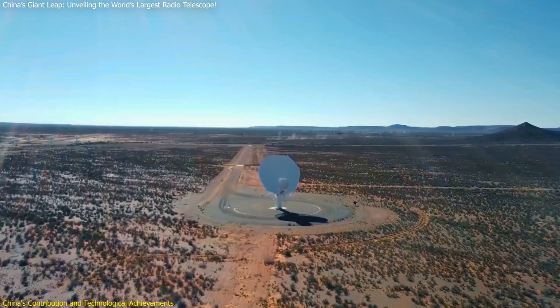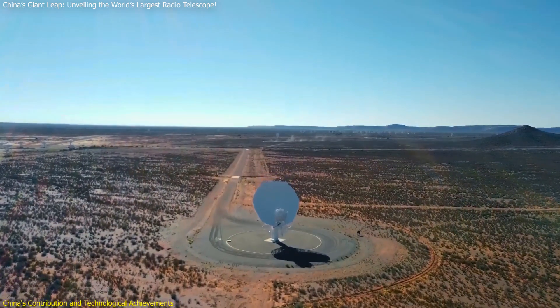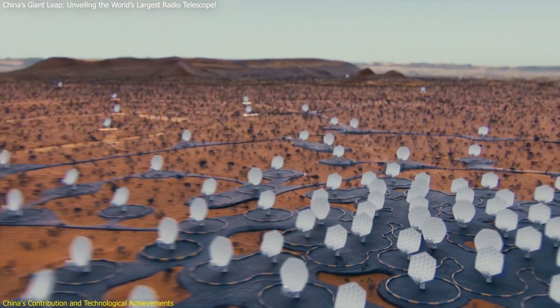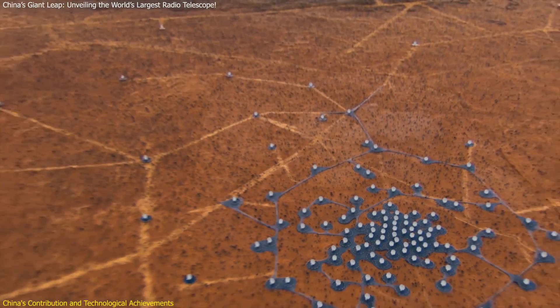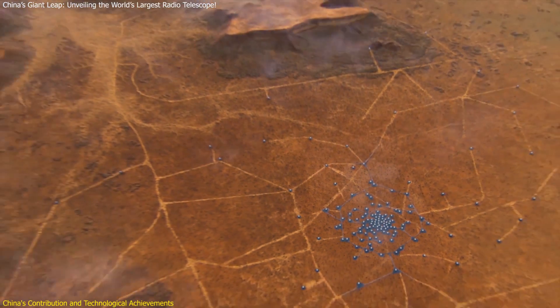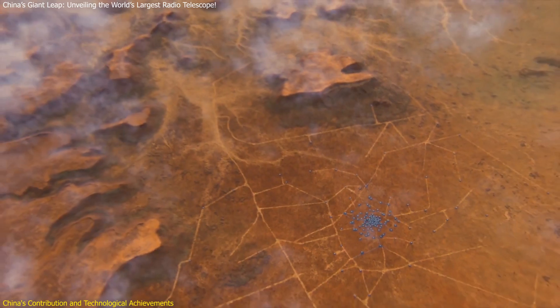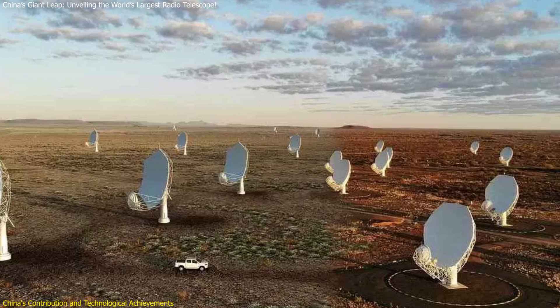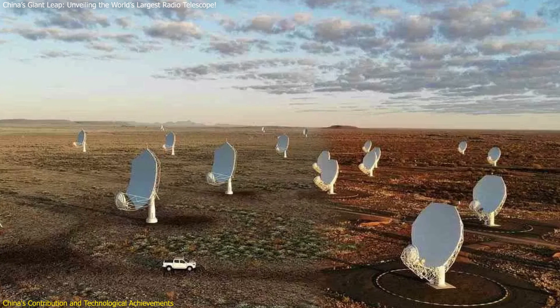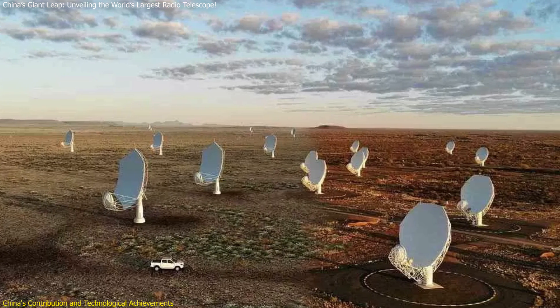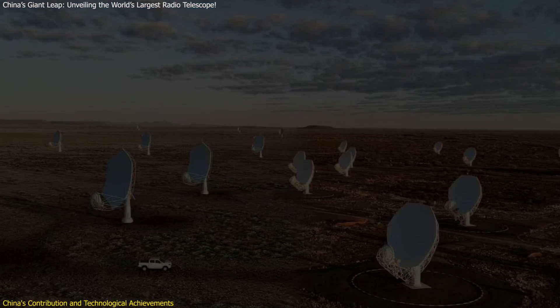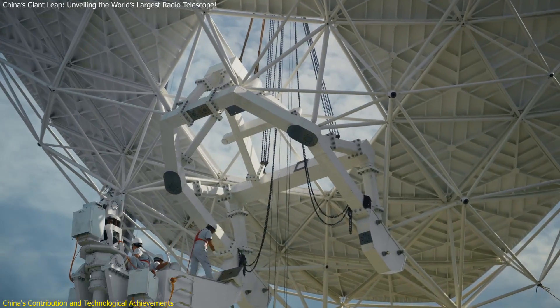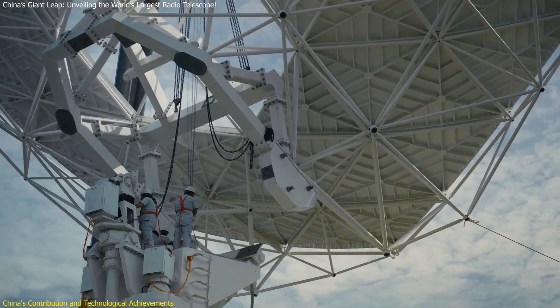The SKAO-MID dishes developed by China are a showcase of cutting-edge engineering and technological excellence. Each antenna dish has been meticulously designed and manufactured to meet the stringent quality standards required for such a groundbreaking project. These dishes have undergone rigorous factory acceptance tests to ensure their performance and durability in the harsh environmental conditions of the Karoo Desert in South Africa. The manufacturing process employs advanced materials and techniques, ensuring the dish's high sensitivity and reliability.